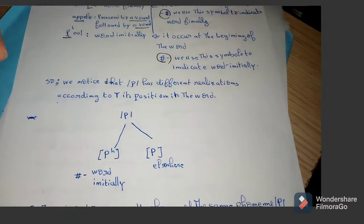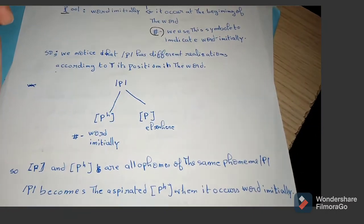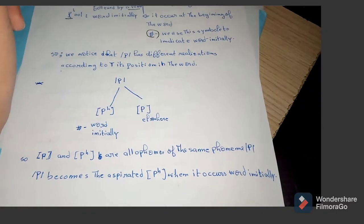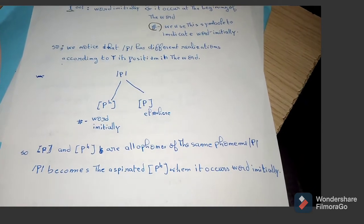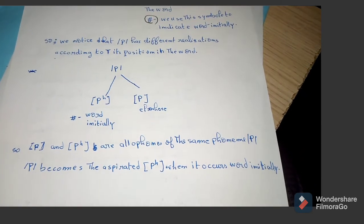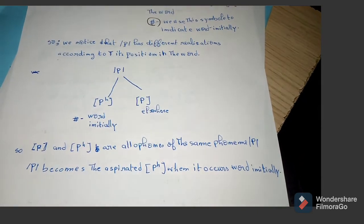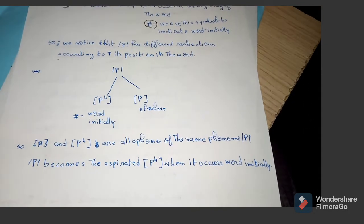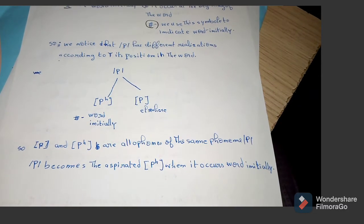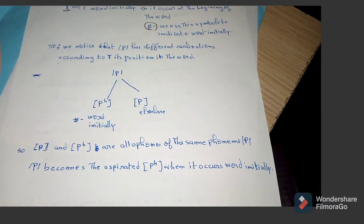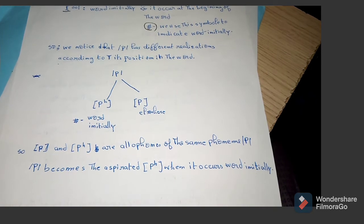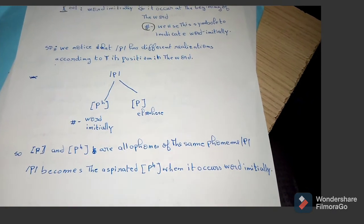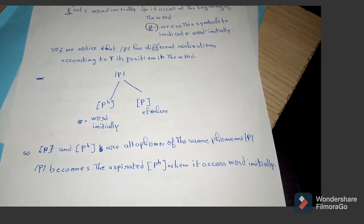Whereas the phoneme /p/ becomes the normal P when it occurs either between two vowels or word-finally. So we can say that the normal P and aspirated P are allophones of the same phoneme /p/. The phoneme /p/ becomes the aspirated P when it occurs word-initially.